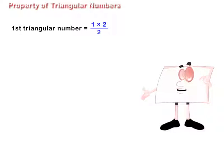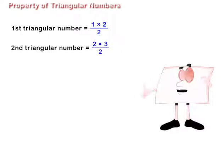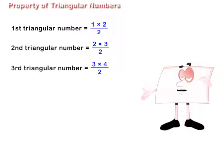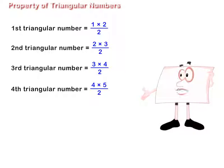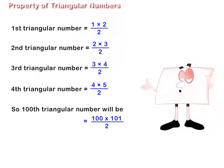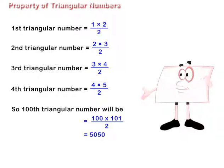Another property: the first triangular number is 1×2/2, the second is 2×3/2, the third is 3×4/2, and the fourth is 4×5/2. So the 100th triangular number will be 100×101/2, which equals 5050.